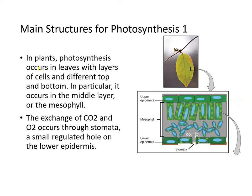In plants, photosynthesis occurs in the leaves with layers of cells, different top and bottom. In particular, this occurs in the middle layer we call the mesophyll. The exchange of CO2 and O2 occurs through tiny little openings called stomata — small regulated holes in the lower epidermis on the side of the leaf.